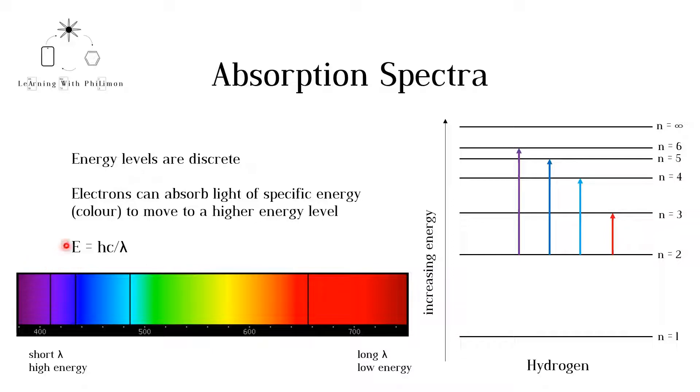This equation helps us understand the relationship between energy and wavelength. Energy, E, is equal to Planck's constant, h, multiplied by the speed of light, c, divided by the wavelength, lambda. The larger the value of the wavelength, the larger the denominator, so the smaller the value of E.